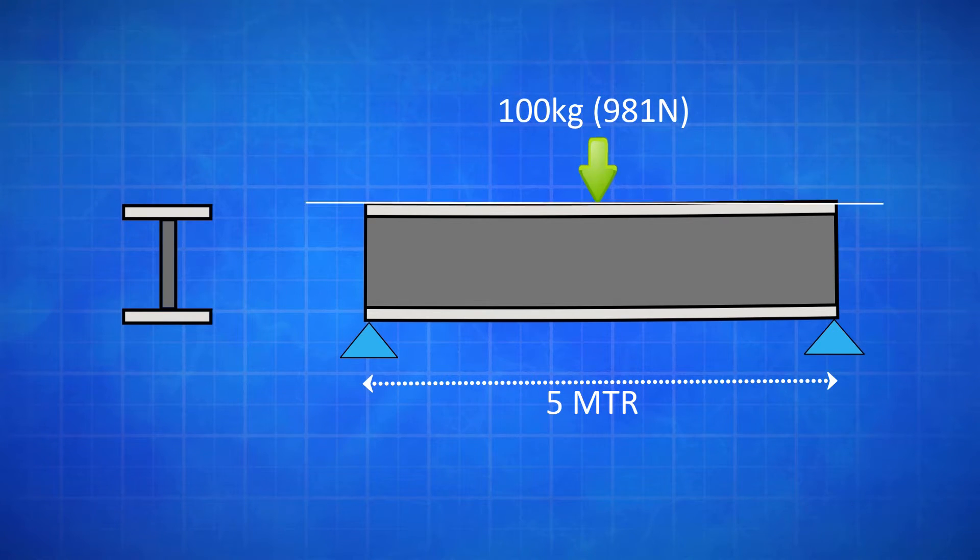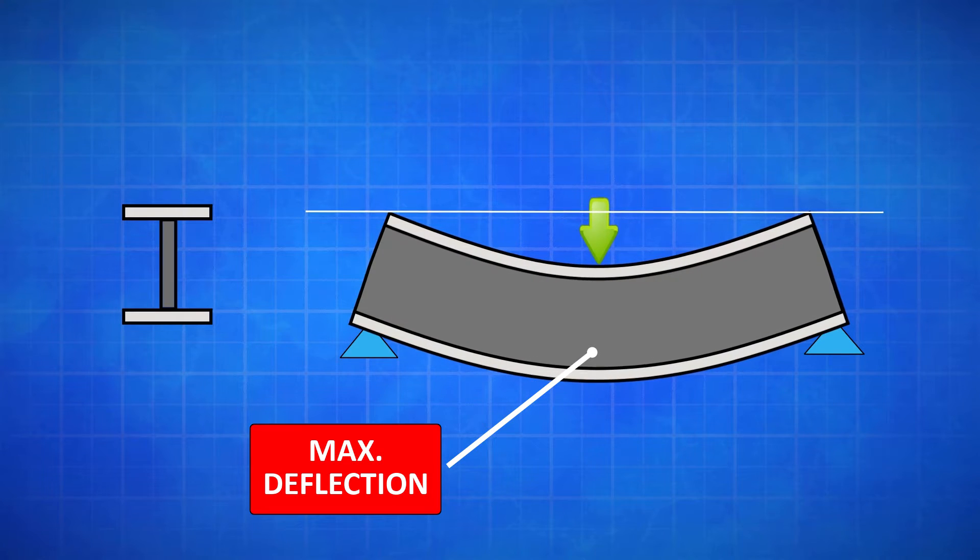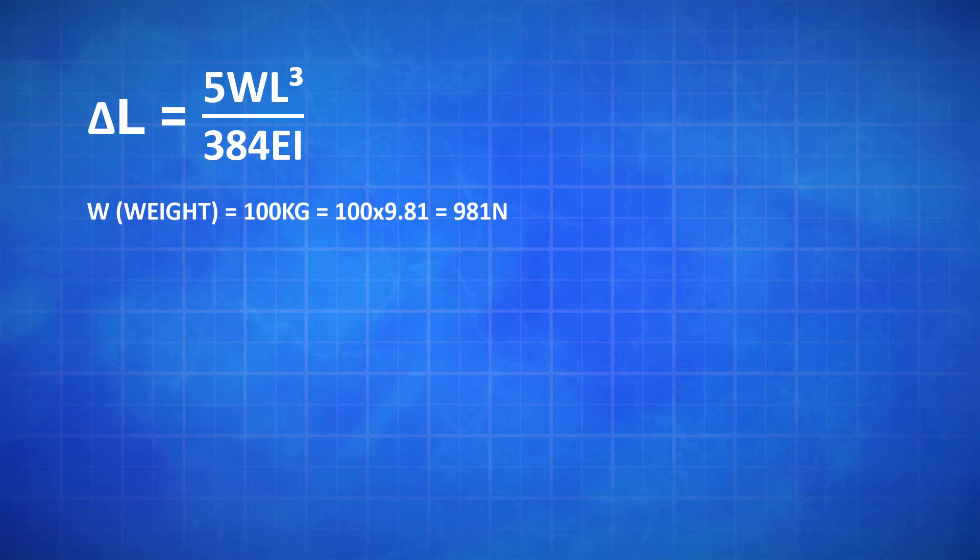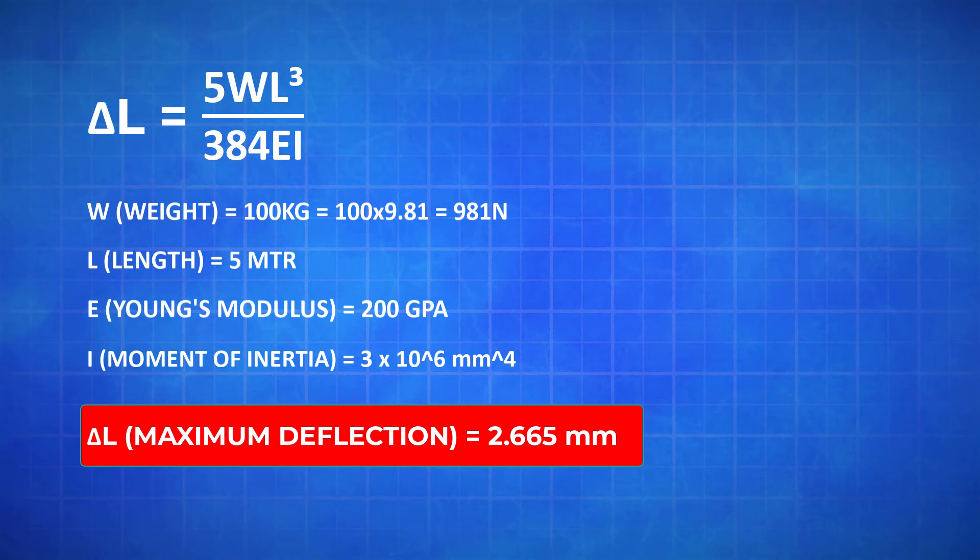We will apply 100 kg of uniformly distributed load or UDL over this 5 meter length simply supported beam. The maximum deflection will occur exactly in the middle of the beam. The formula available to calculate the maximum deflection of the beam as follows. Delta L equal to 5 WL cube divided by 384 EI. Weight W is 100 kg. Multiply 9.81 for weight to convert the weight into newtons. Length L is 5 meter. Young's modulus E is 200 GPa. This value will change depending on material. Moment of inertia I comes to this value. Please check out my video description for the calculator to calculate the moment of inertia for I-Beam. After the calculation, we got the maximum deflection as 2.665 mm. Now we have determined the maximum deflection in the beam is 2.665 mm.